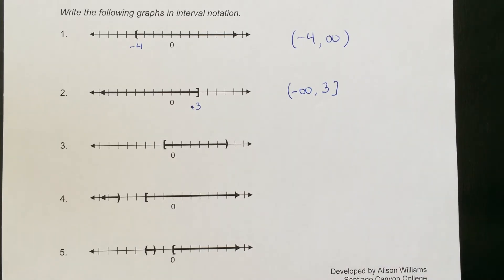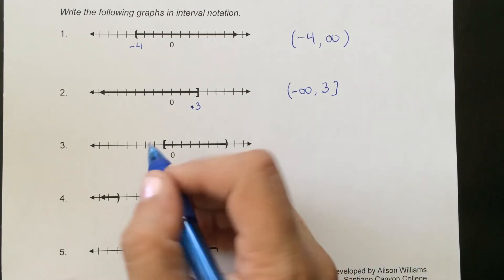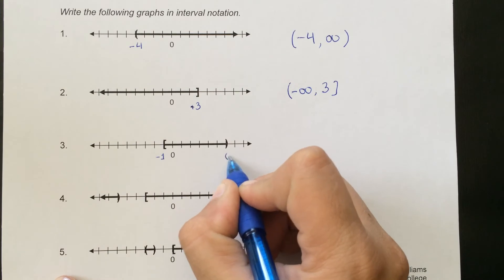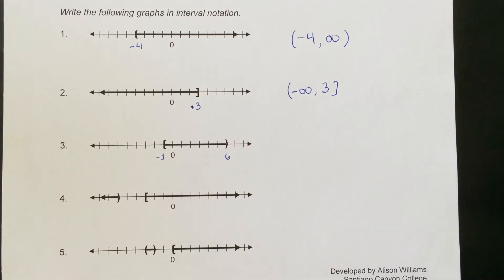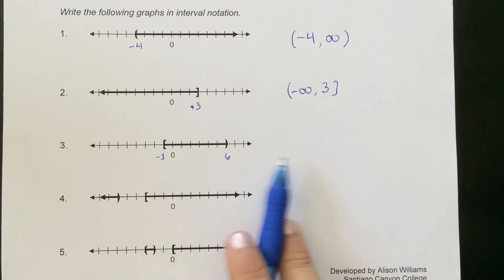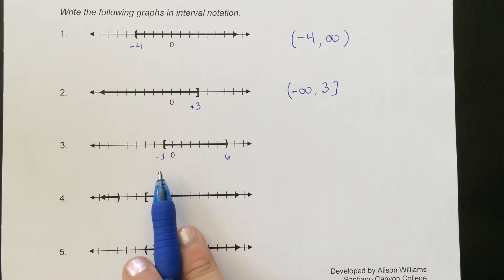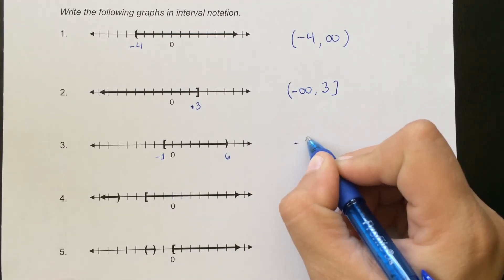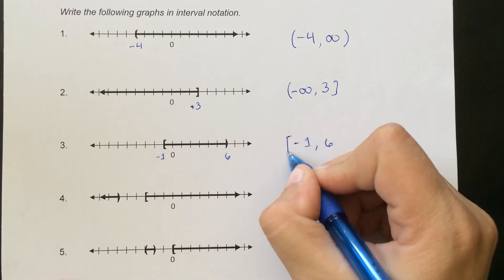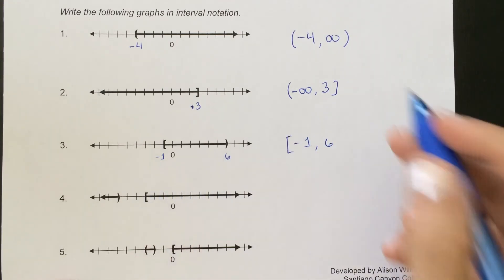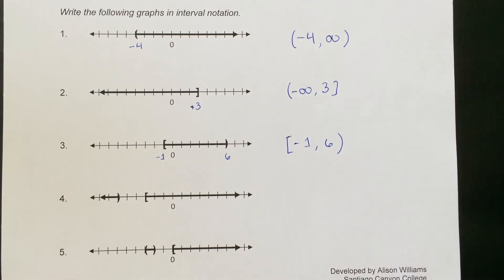So that is the basics of interval notation. Looking at the next example, we have negative 1 to 6. This goes from negative 1 up to 6, trapped between those two values. We would write negative 1 to 6 with a bracket around negative 1 because we're allowed to equal negative 1, and a parenthesis around 6 because it's not allowed to equal 6.